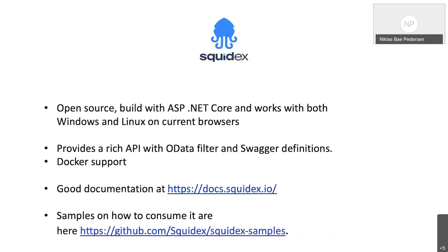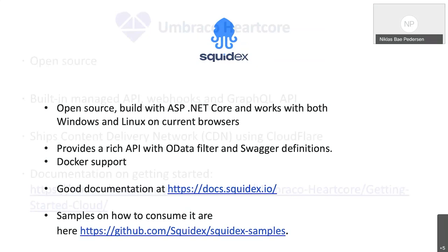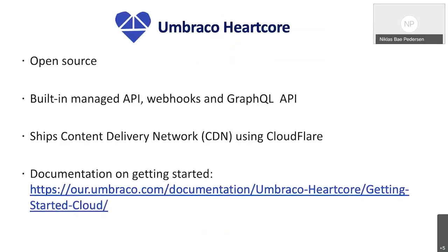Squidex is also open source like the other headless CMS mentioned here. It offers a rich API with full data filtering and Swagger definitions, has Docker support, and offers good documentation and samples on their site.